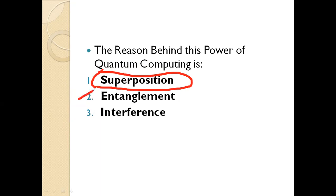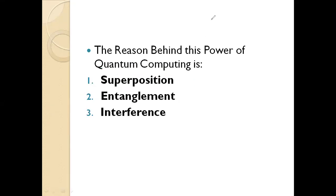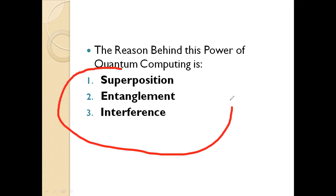About entanglement and interference, I will discuss them in detail in the coming lectures. For now, you should know that the reason behind the power of quantum computation is because of these three important concepts — or you can say, the three pieces of quantum computing: superposition, entanglement, and interference.